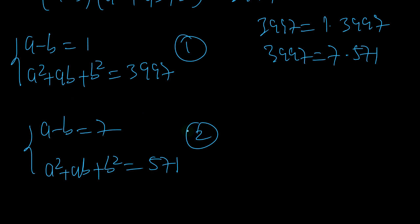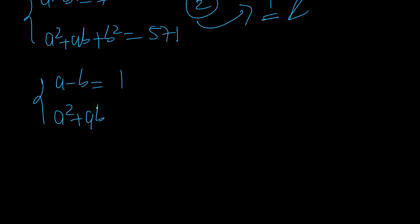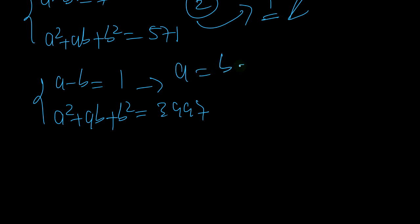I solved the second case and it does not give real solutions — it gives imaginary solutions — so we're going to forget that one and work on the first case. In the first case we have a minus b equals 1 and a squared plus ab plus b squared equals 3997.